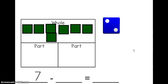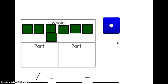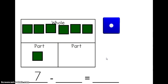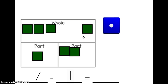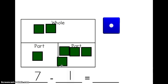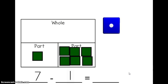Seven minus — let's take away some cubes and slide them into a part. Let's roll our dice to see how many cubes. Oh! Only one. We'll slide one cube into part of my mat. Seven minus one equals... We're going to look at our whole and see how many cubes we have left: one, two, three, four, five, six. So seven minus one must equal six.